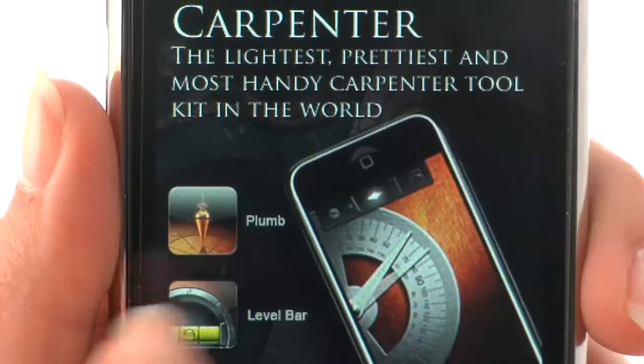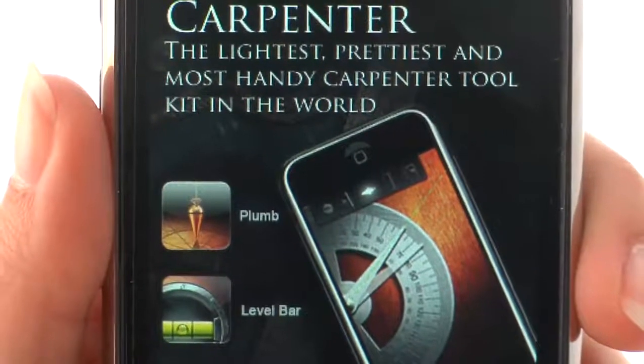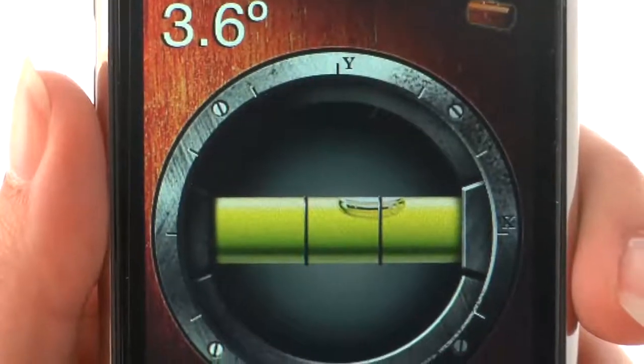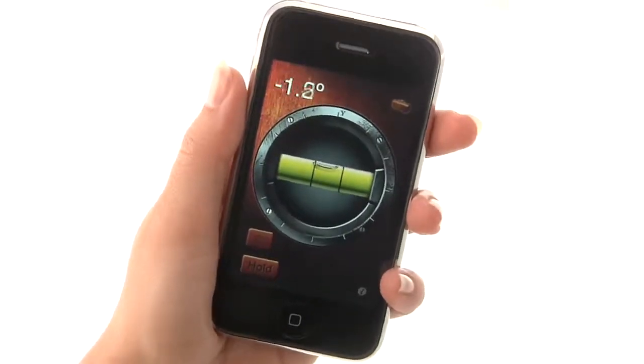Launch the app, select Level Bar, and start hanging your framed photos or artwork. It works with the individual sensor of your iPhone and works best if you calibrate first.